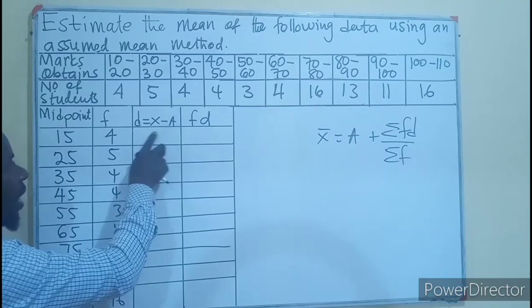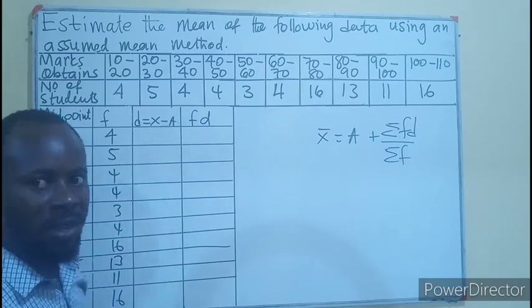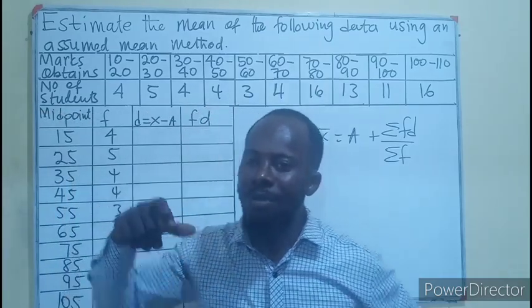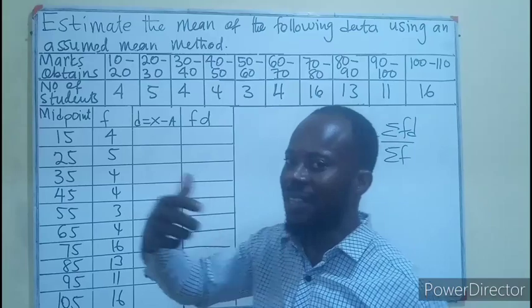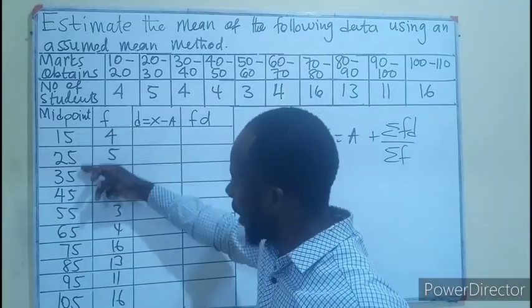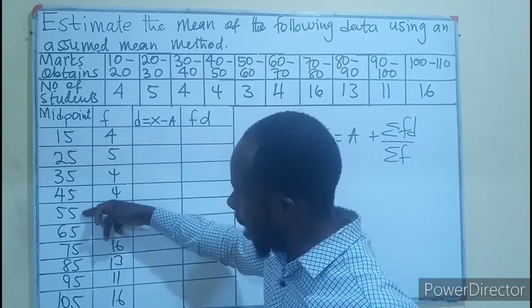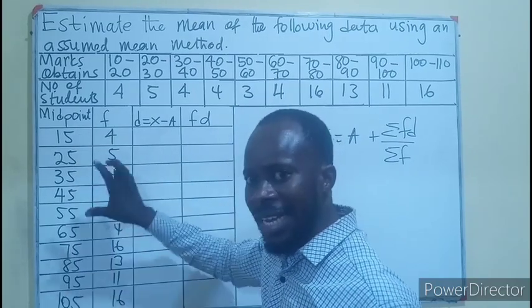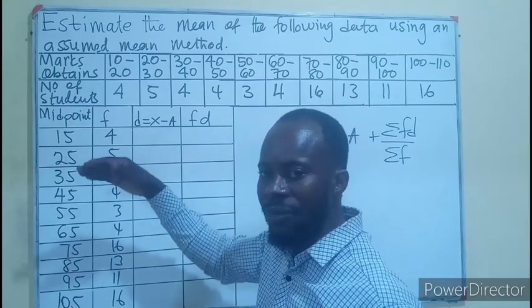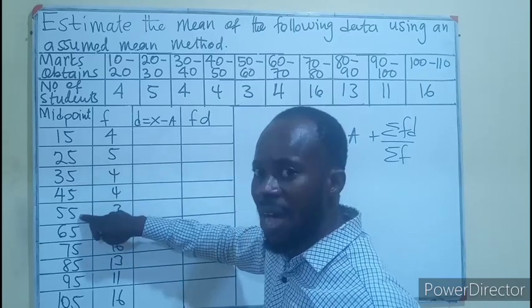Now here we need to find the assumed mean. Always the assumed mean is in the middle - we assume the mean to be in the middle, that is the central tendency. We look at our data, we have 1, 2, 3, 4, 5, 6, 7, 8, 9, 10, that's 10 different data. The middle will be between the fifth and the sixth.